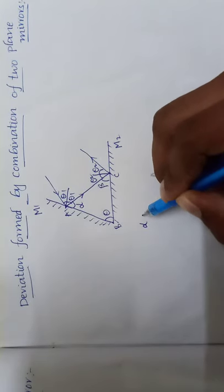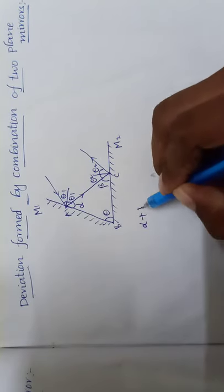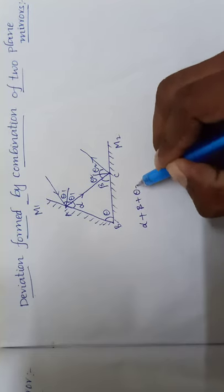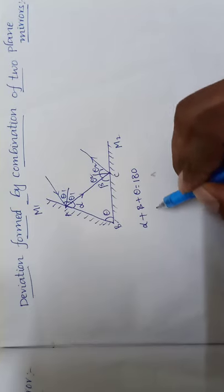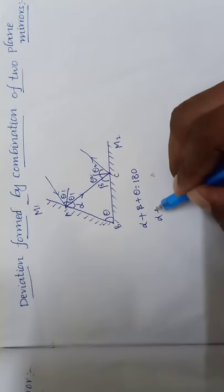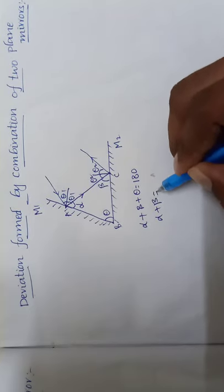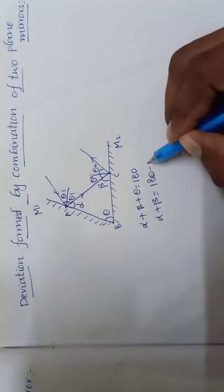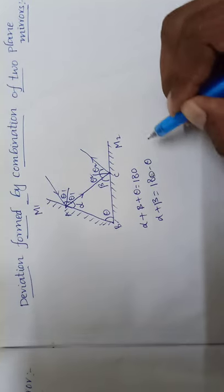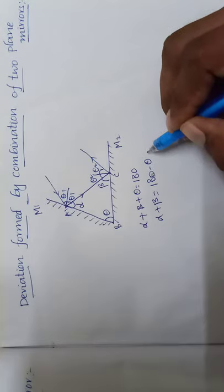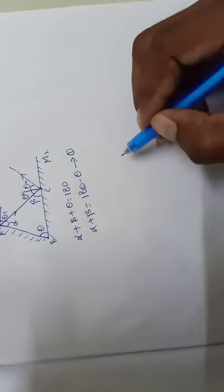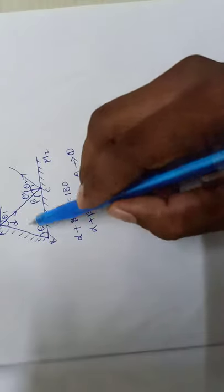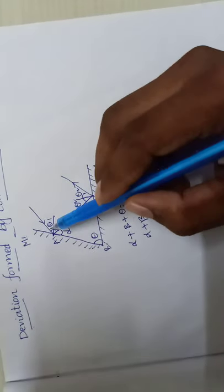So we can write like this: alpha plus beta is equal to 180 minus theta. Okay, this is equation number one. So we know that the deviation from first mirror is deviation of first mirror is 2 alpha, deviation of second mirror is 2 beta.